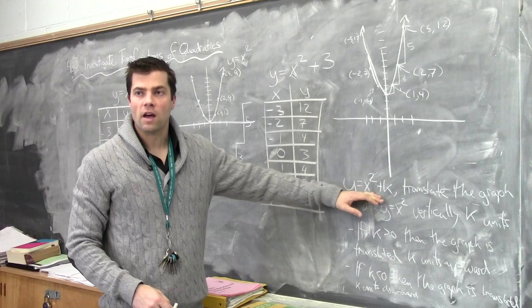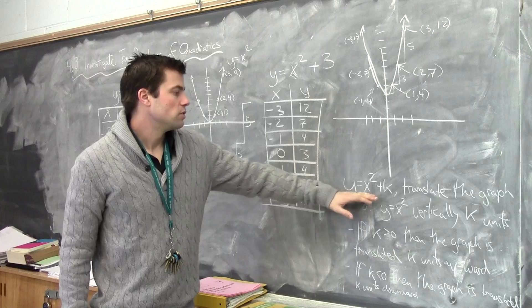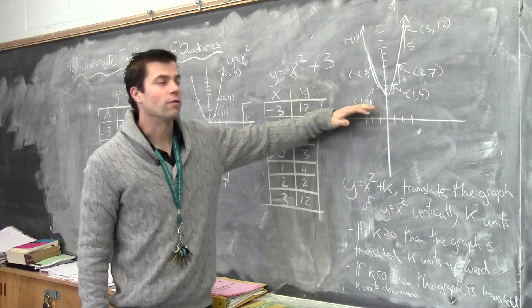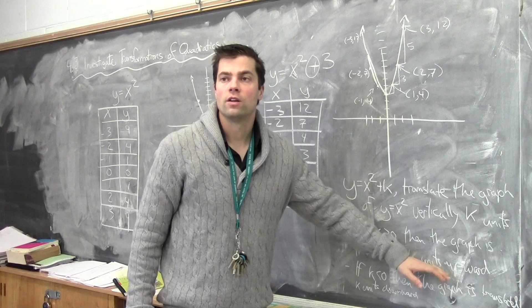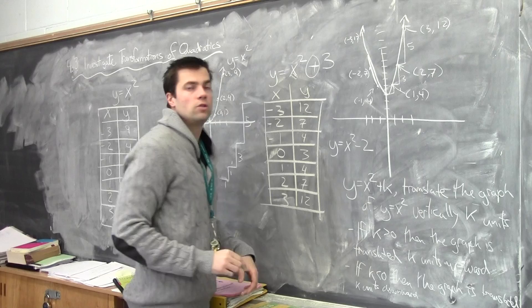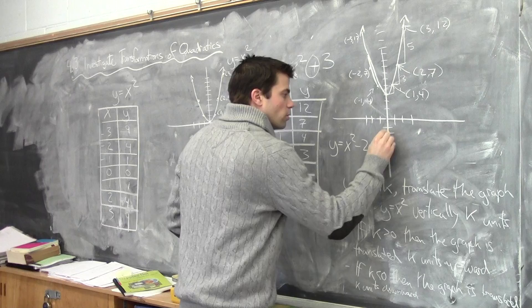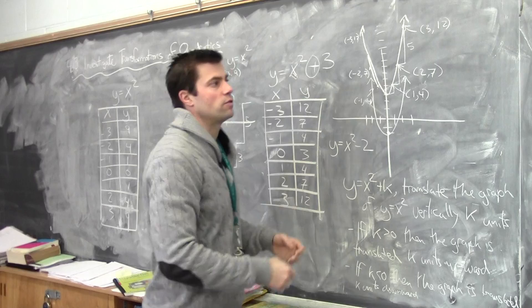Our rule then: when we have an equation that looks like x squared plus k, we translate the original graph y equals x squared vertically k units. Whether it's positive or negative dictates whether we go up or down — a vertical translation either up or down. If k is greater than 0, the graph is translated upward. If k is less than 0, the graph moves down — for example, x squared minus 2 moves the graph down 2 units, with the vertex there, still opening up.